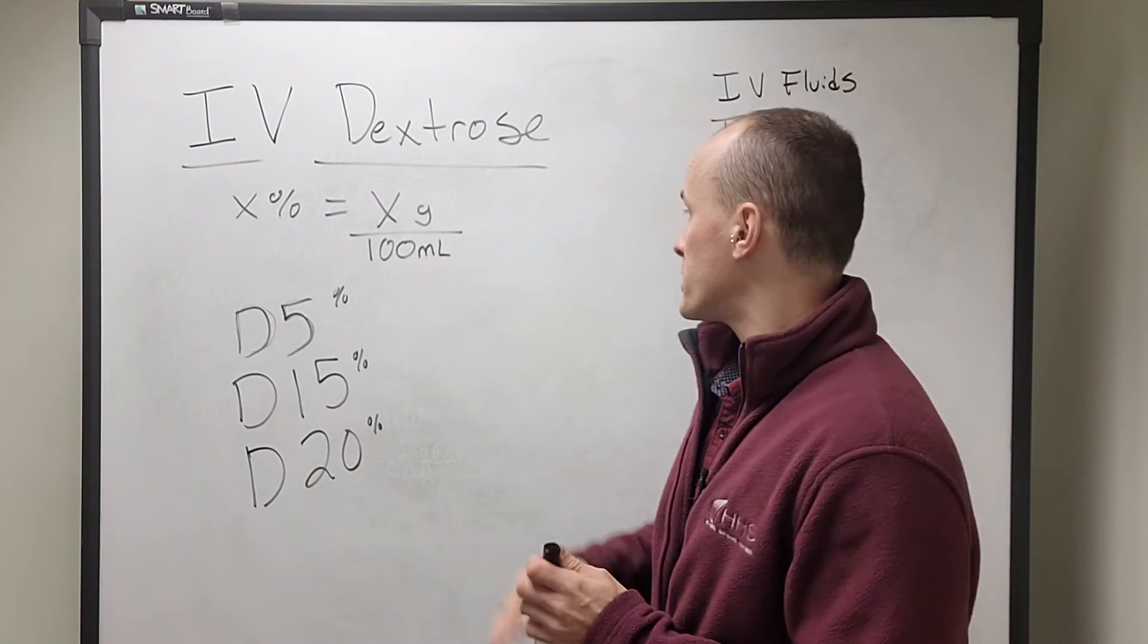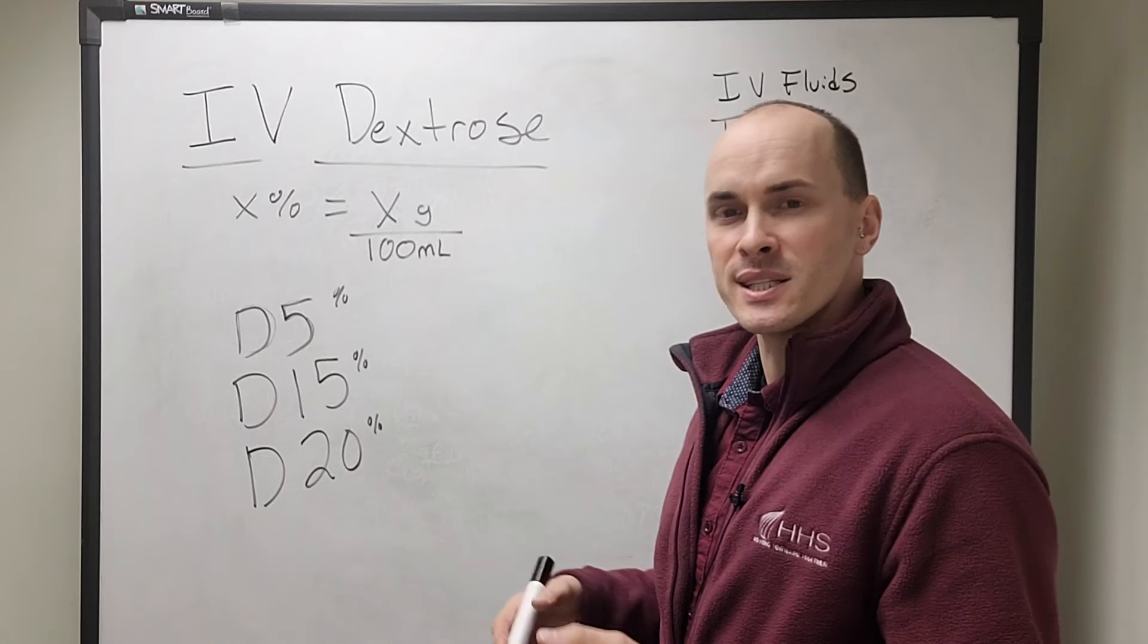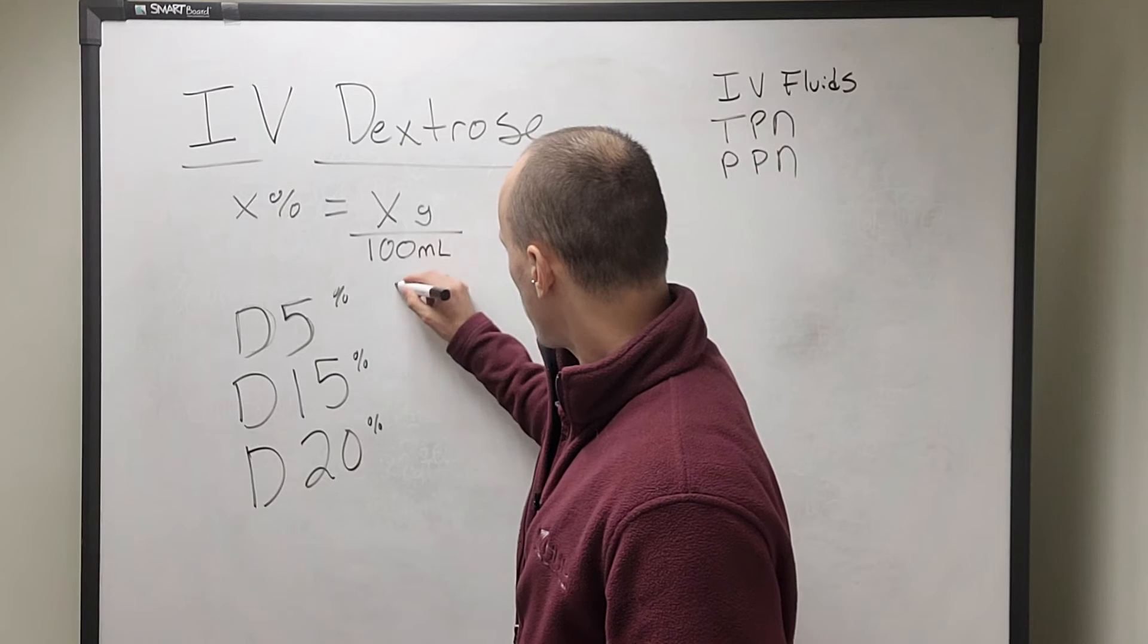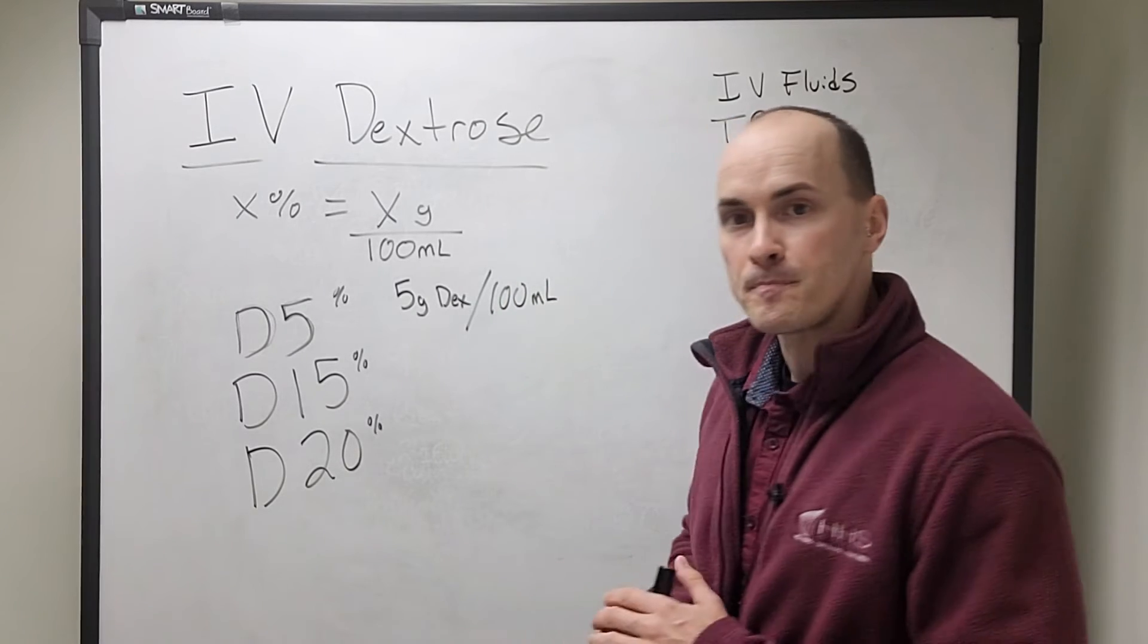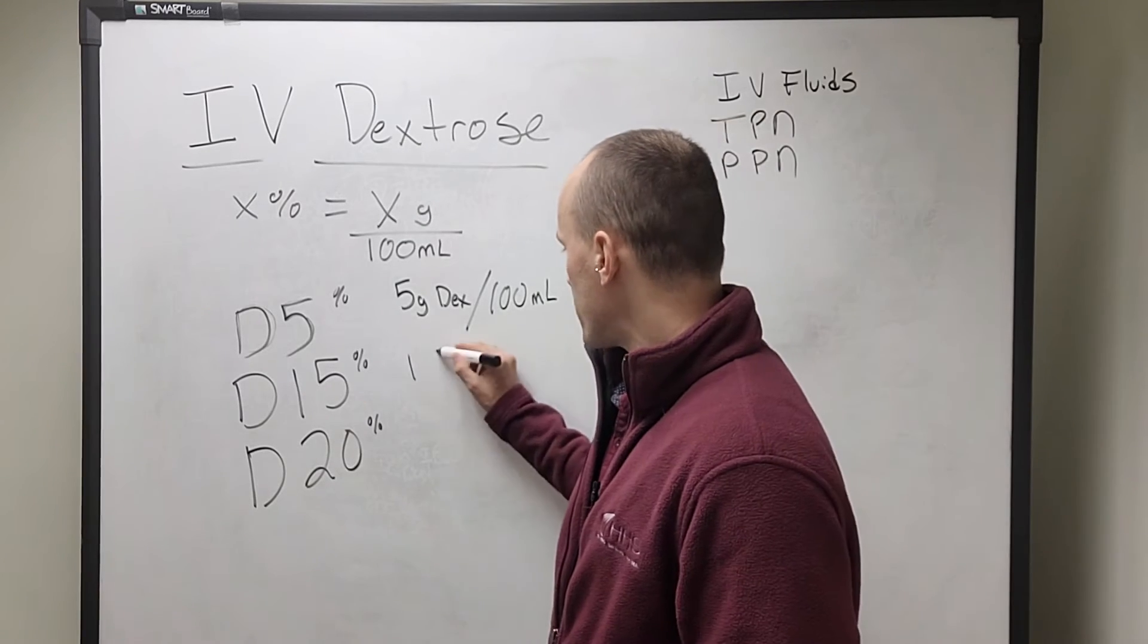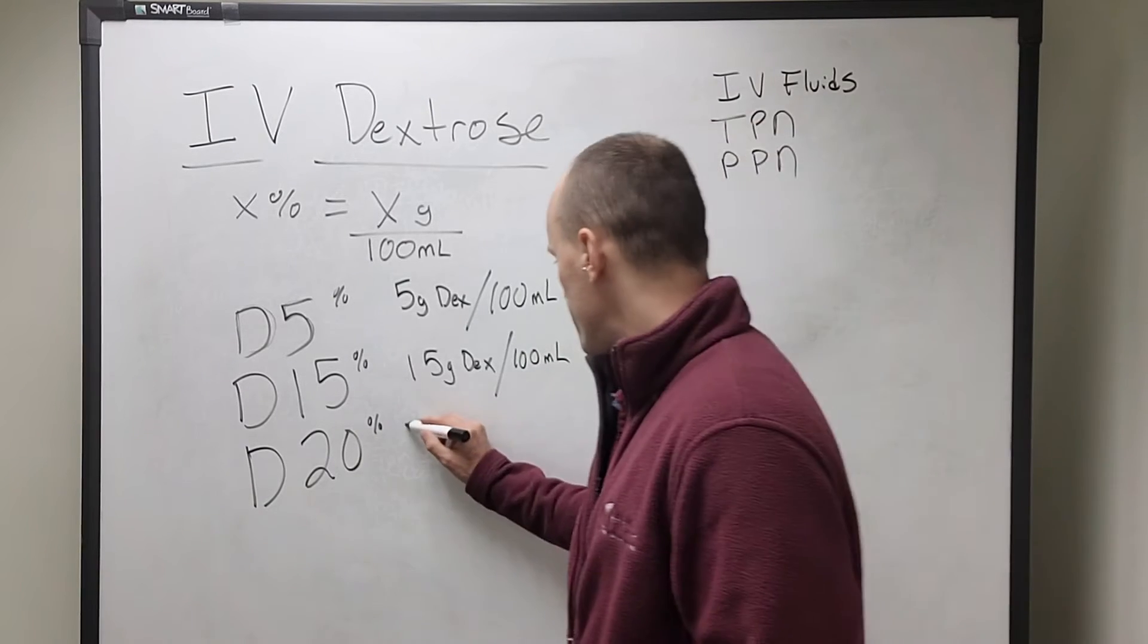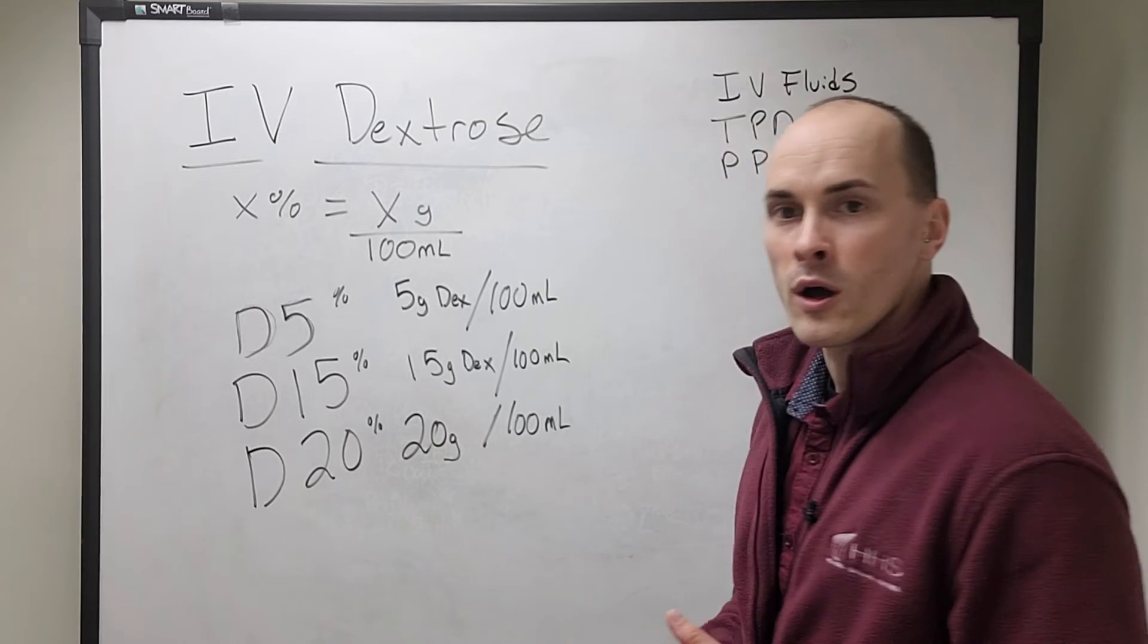And the units that are associated with this are grams per 100 milliliter. So what this means is if you have IV fluids that have D5 in them, it's a 5% dextrose solution, or there are 5 grams of dextrose per 100 mils provided. D15, so now we're getting into TPN, is going to be 15 grams of dextrose per 100 milliliters. D20 is going to be 20 grams per 100 milliliters, and so on and so forth.